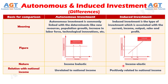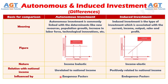Difference Number 4: Autonomous investment is unrelated to national income, while induced investment is positively related to national income. This is because autonomous investment remains unchanged or unaffected by the change in income, but induced investment tends to increase or decrease with the change in income.